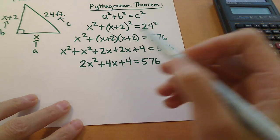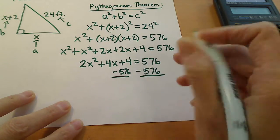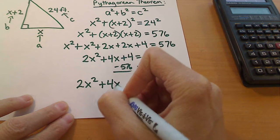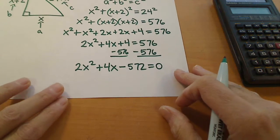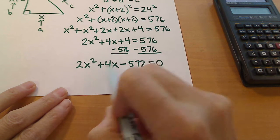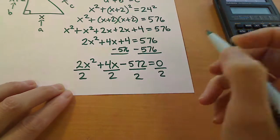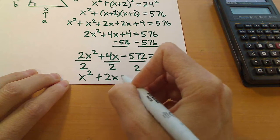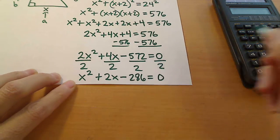Now we want to set it to zero because this is a quadratic, and the way that we are going to solve these is either by factoring or using the quadratic formula. Subtracting 576 from both sides will give us negative 572. At this point we want to recognize that each of these numbers is divisible by 2, so I'm going to divide everything by 2. This is going to become x squared plus 2x minus 286 equal to 0.